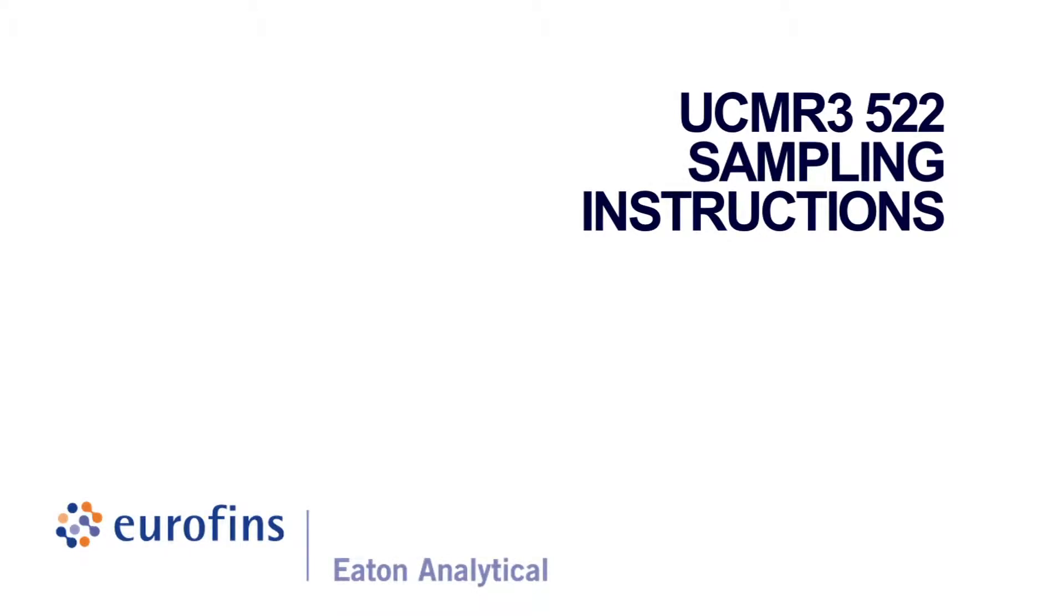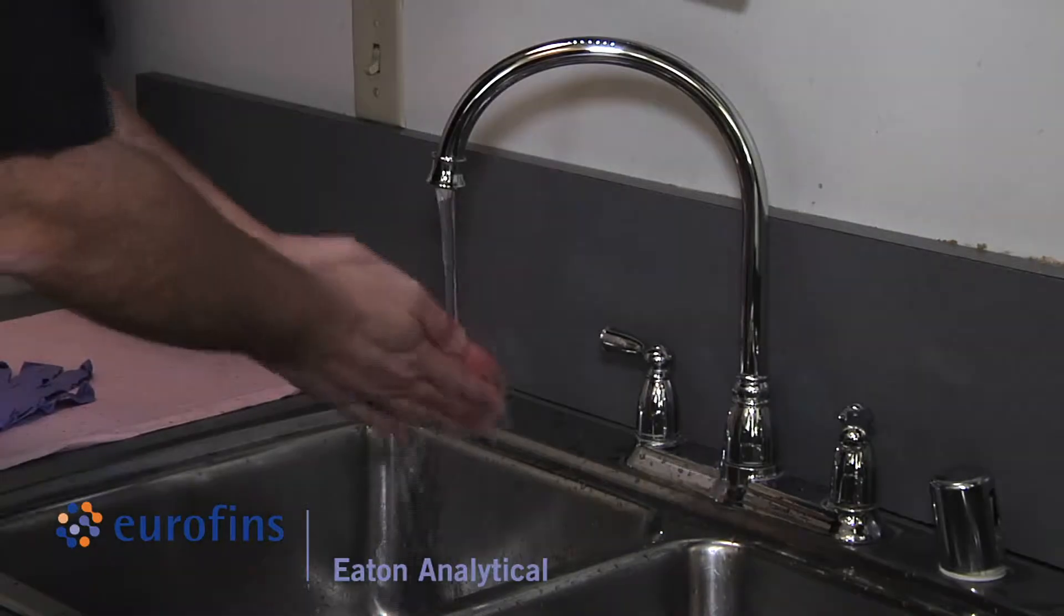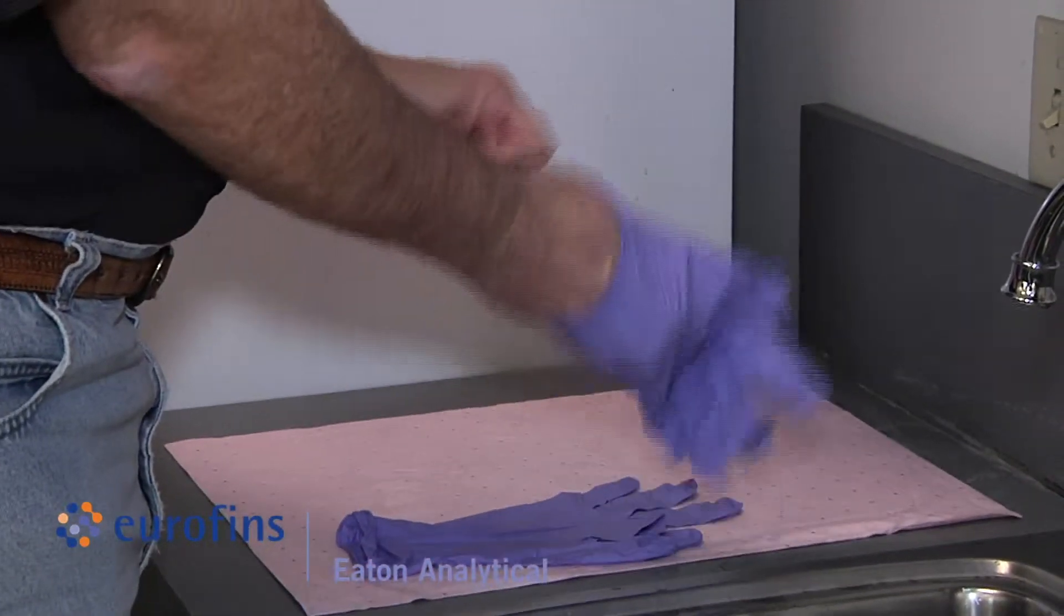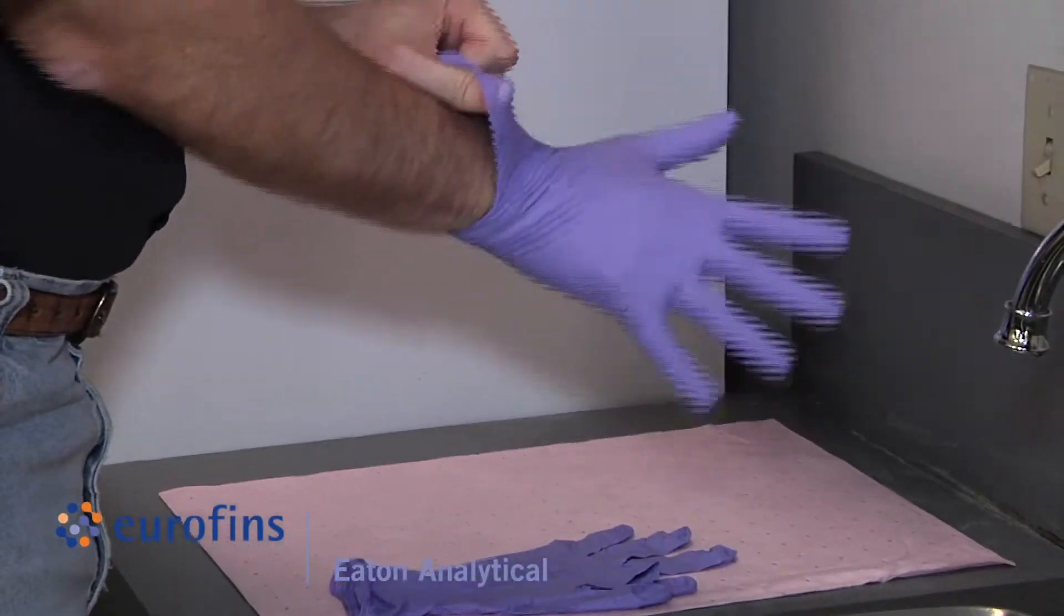UCMR 3 522 sampling instructions. Wash your hands before sampling and wear the powderless nitrile gloves which are included in the kit during sampling and sample handling.